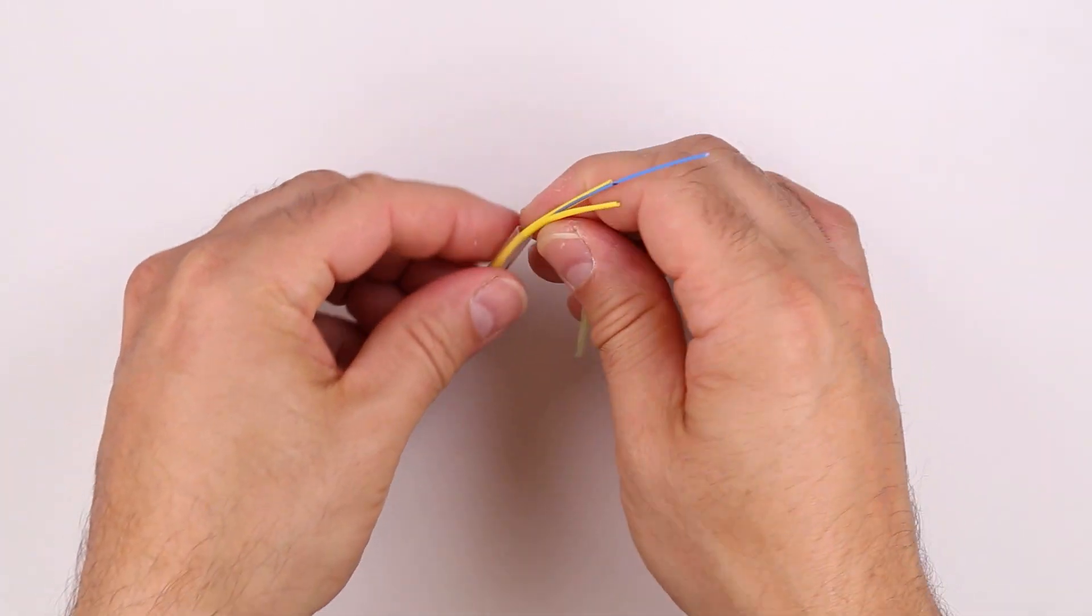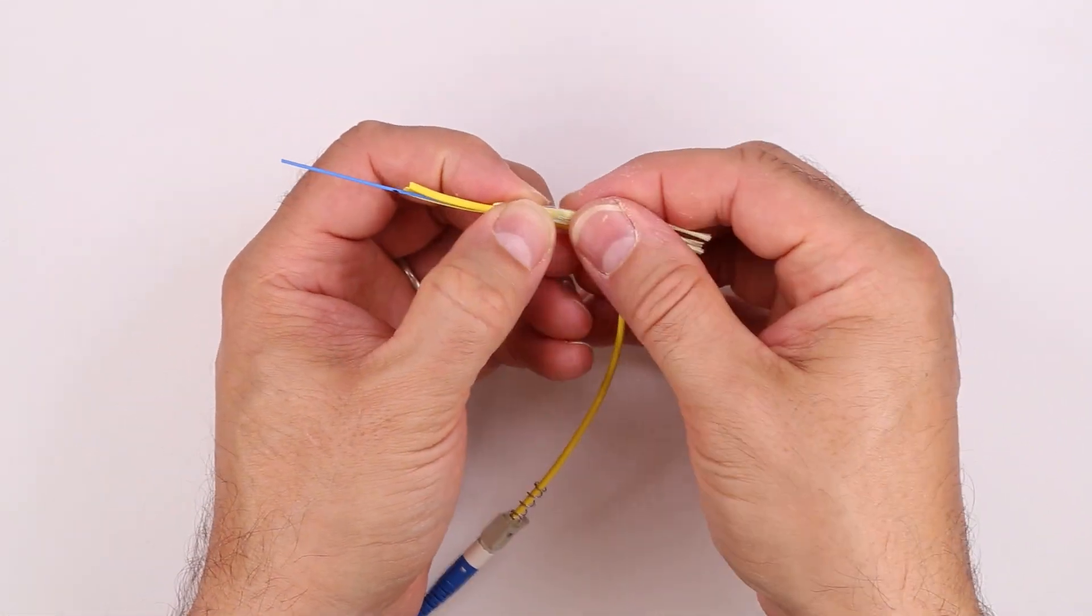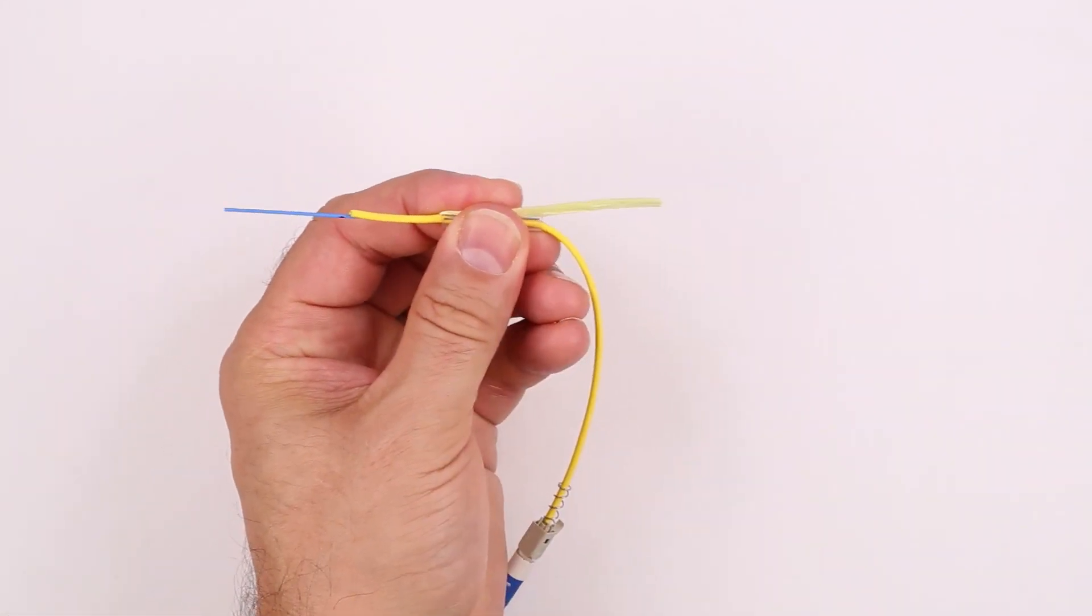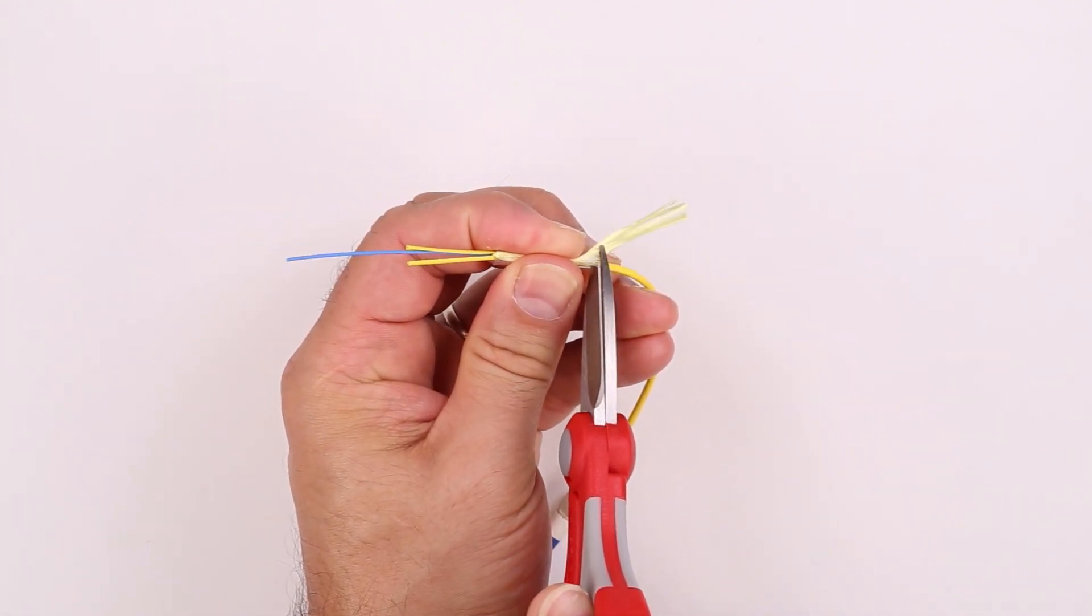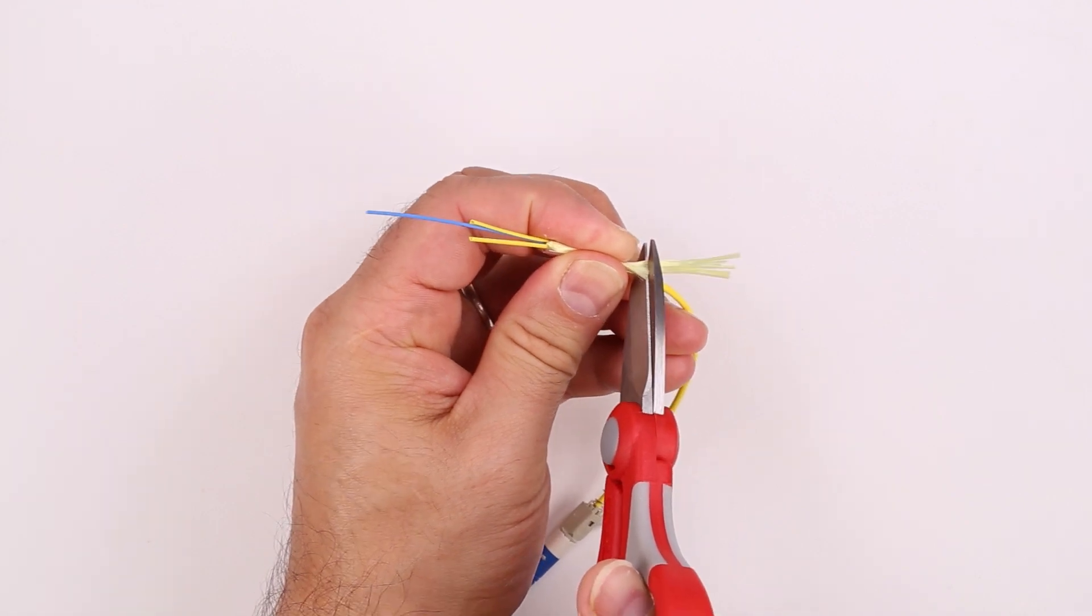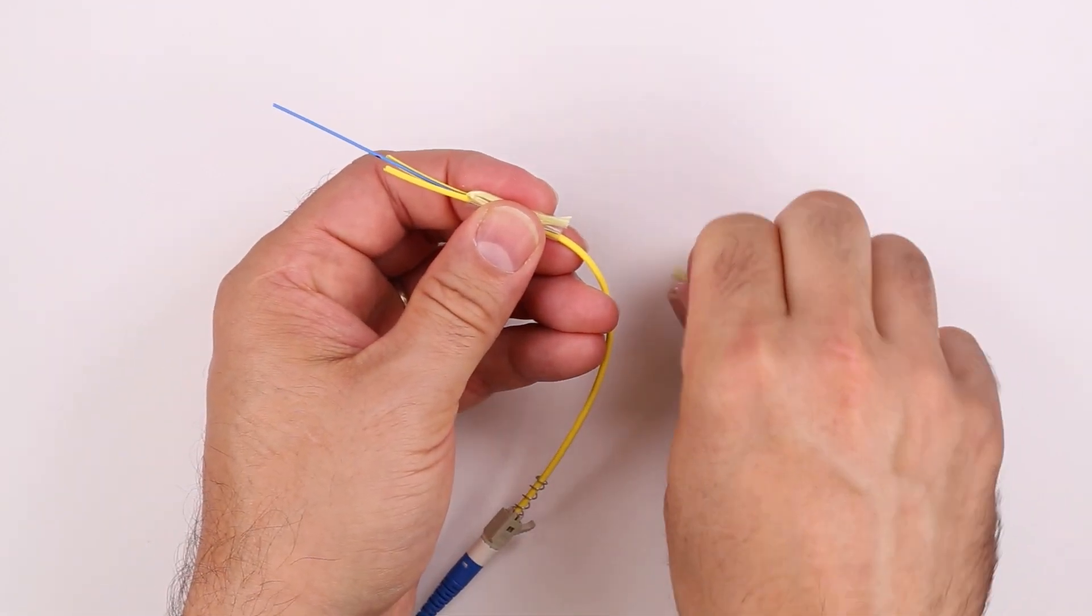Place the end of the protective tube against the aramid where it exits the slit in the jacket. While keeping the protective tube aligned with the end of the jacket slit, fold the aramid back over the protective tube. Place the aramid shears against the tube and cut the aramid so that it is approximately 2mm longer than the length of the tube.